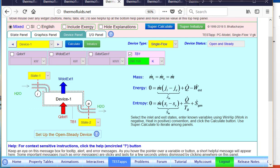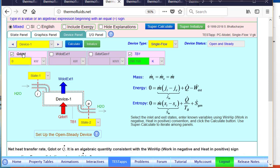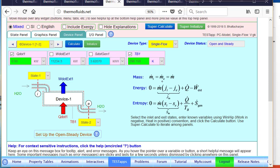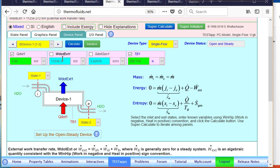And in the device panel, we set up the turbine. State one is the inlet, state two is the exit, and it's an adiabatic turbine. We can calculate, solve the energy equation to find the external work. So the turbine produces about 11.2 megawatts.